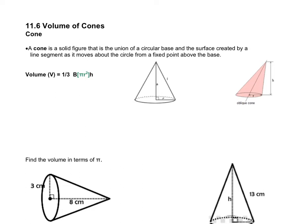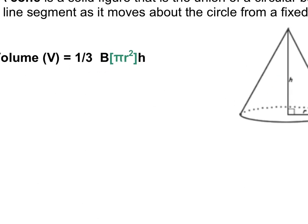The formula is one-third Bh to find your volume. However, every single cone's base is a circle. It's not a semicircle, it's a full circle. So we can actually go from volume equals one-third Bh to say something else.